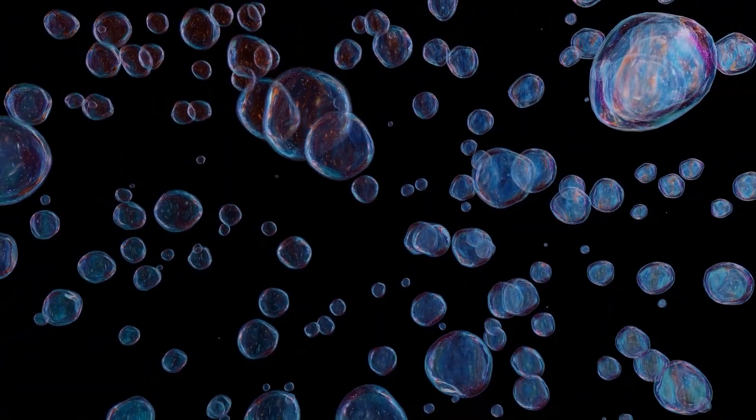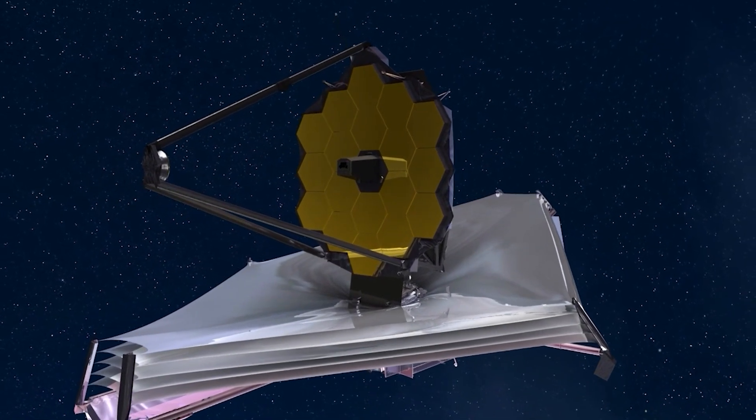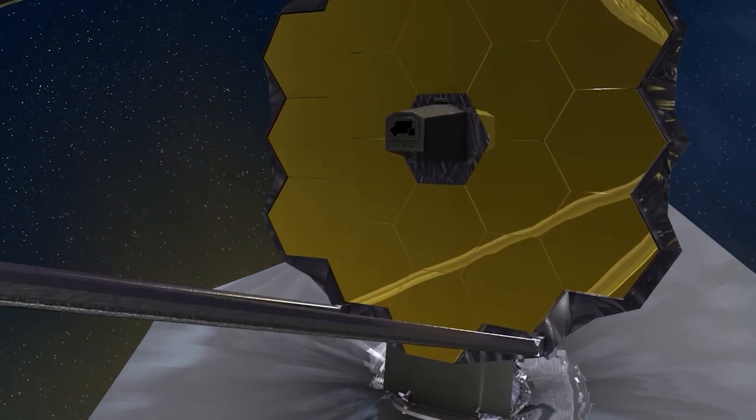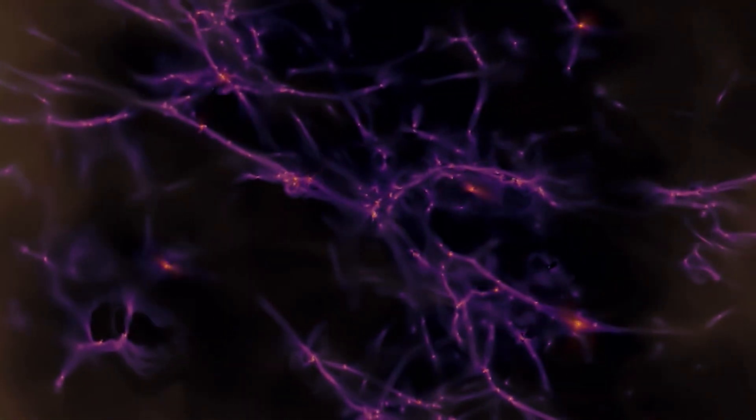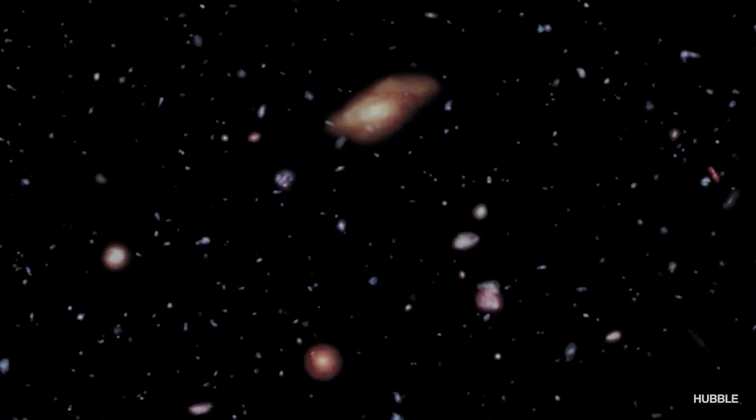Thanks to the James Webb Space Telescope, we discovered the cosmic web, a large-scale structure of galaxies, filaments, and voids. This network shows how matter is distributed and how galaxies evolve over time, originating from small fluctuations in the density of the early universe and amplified by gravity.